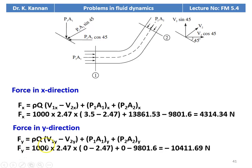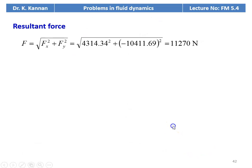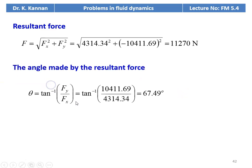Force in y-direction: Fy = ρQ(V1y − V2y) + P1A1y + P2A2y = 1000 × 0.247 × (0 − 2.47) + 0 − 9,801.6 = −100,411.69 Newtons. Resultant force F = √(Fx² + Fy²) = √(4,314.34² + 100,411.69²) = 112,170 Newtons. Angle θ = tan⁻¹(Fy / Fx) = tan⁻¹(100,411.69 / 4,314.34) = 67.49 degrees.